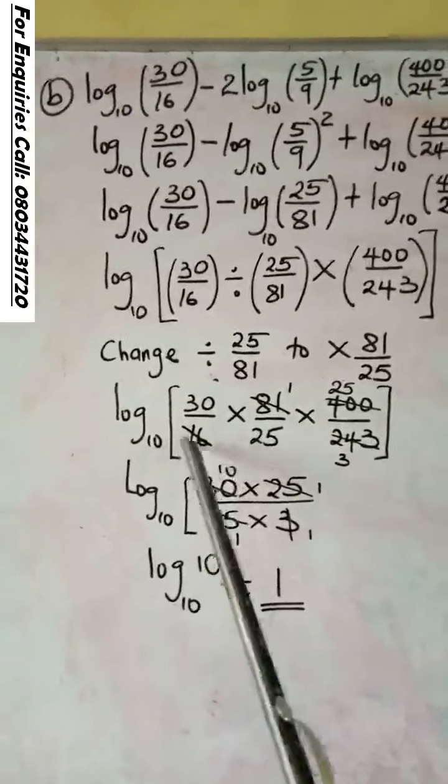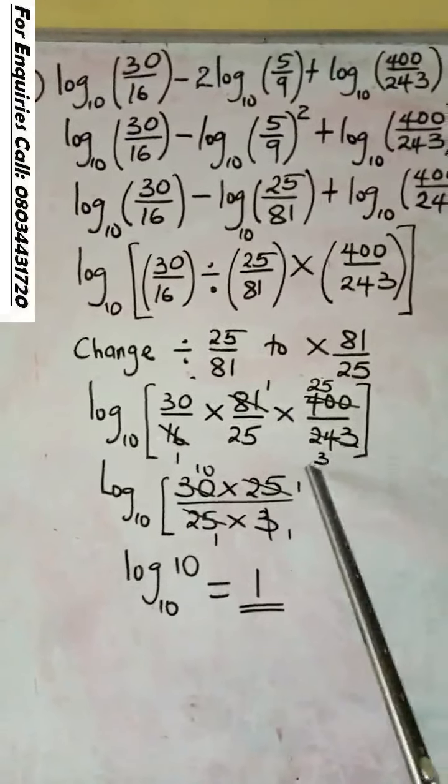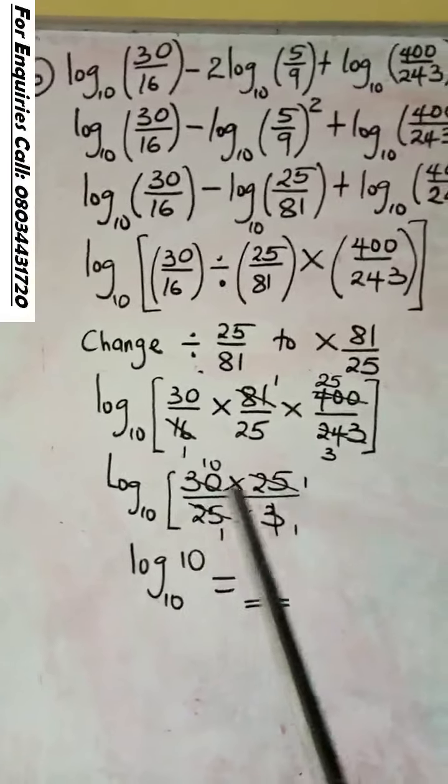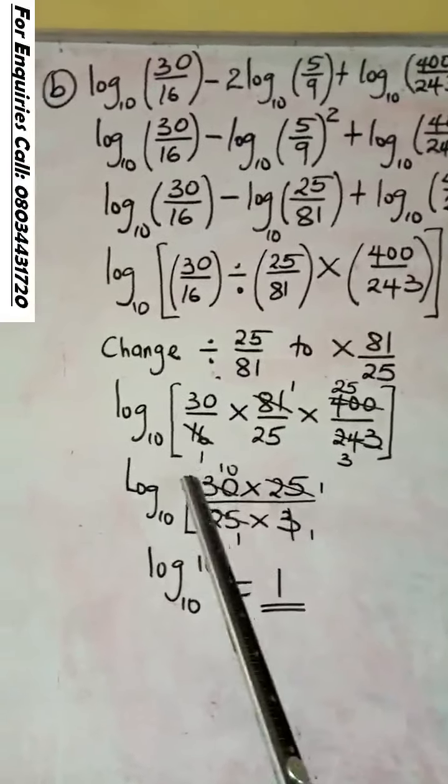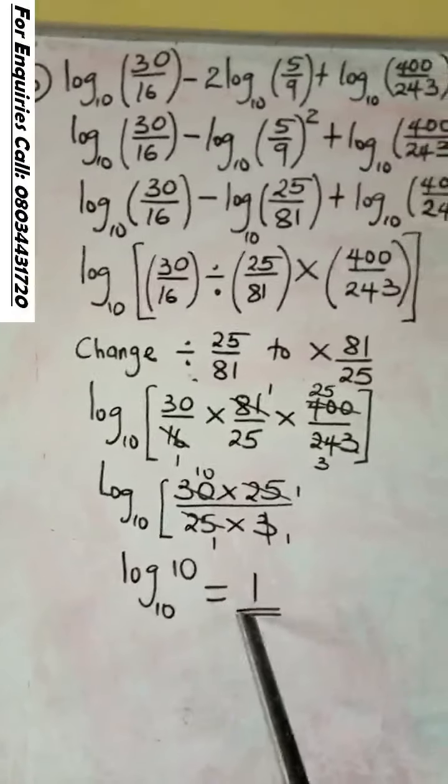You use 16 to go 400 to give you 25. 81 will go 243 to give you 3. When you write it down, 25 cancel 25, 3 and 30 is 10. So you still have it as log 10 base 10 to give you 1.